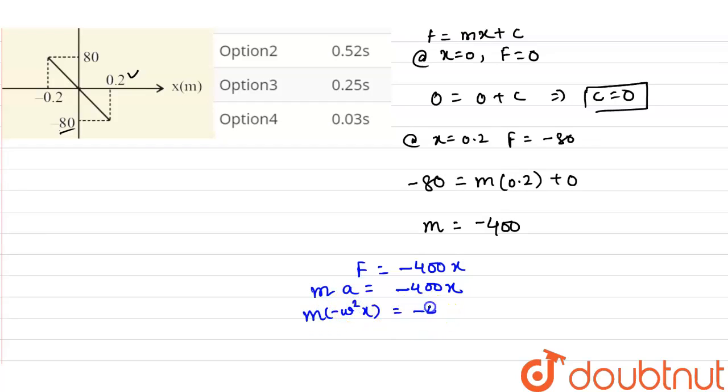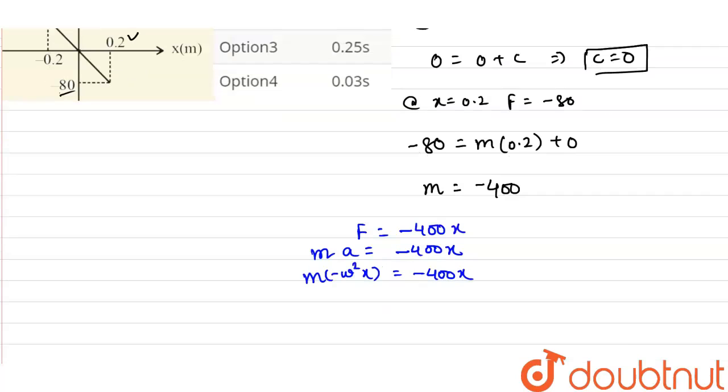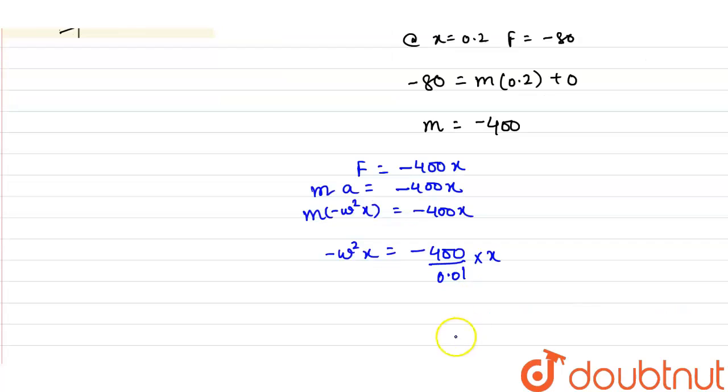So this will be equals to minus 400x. So from here we get minus omega square x equals to minus 400 divided by mass.